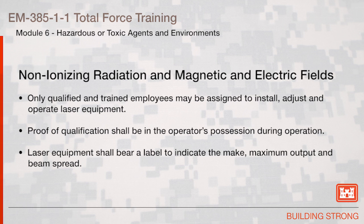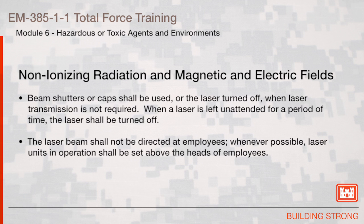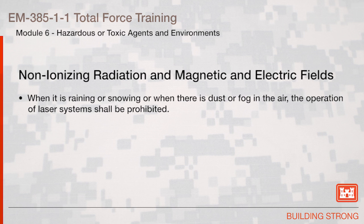Proof of qualification shall be in the operator's possession during operation. Laser equipment shall bear a label to indicate the make, maximum output, and beam spread. Areas in which lasers are used shall be posted with standard laser warning signs. Employees whose work requires exposure to laser beams shall be provided with appropriate laser safety goggles. Beam shutters or caps shall be used or the laser turned off when laser transmission is not required. When the laser is left unattended for a period of time, the laser shall be turned off. The laser beam shall not be directed at employees. Whenever possible, laser units in operation shall be set above the heads of employees. When it is raining or snowing, or when there is dust or fog in the air, the operation of laser systems shall be prohibited.